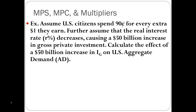To solve these types of problems, first we have to find out what our MPC and MPS are. Then we need to know what the correct multiplier to use is. Then we need to know what our initial change is in whatever variable changed — whether it be gross private investment, government spending, etc. Then solve the equation by taking the multiplier and multiplying it by that initial change.